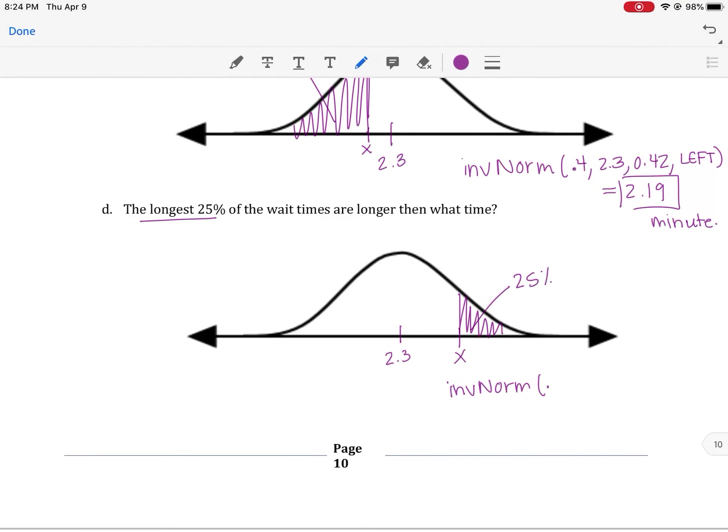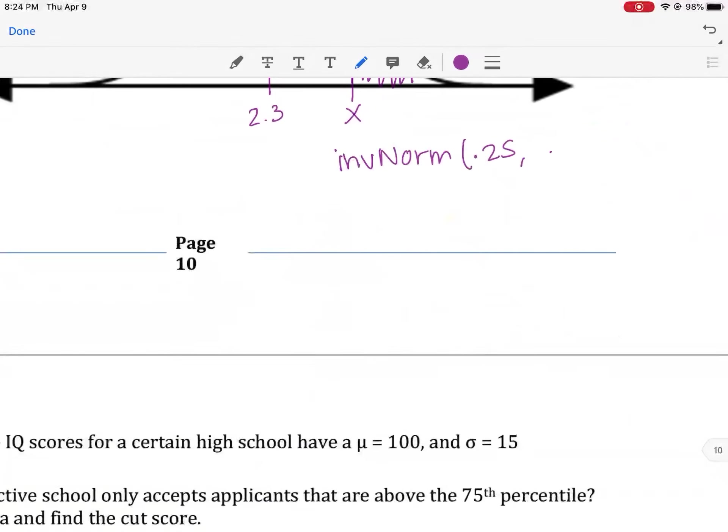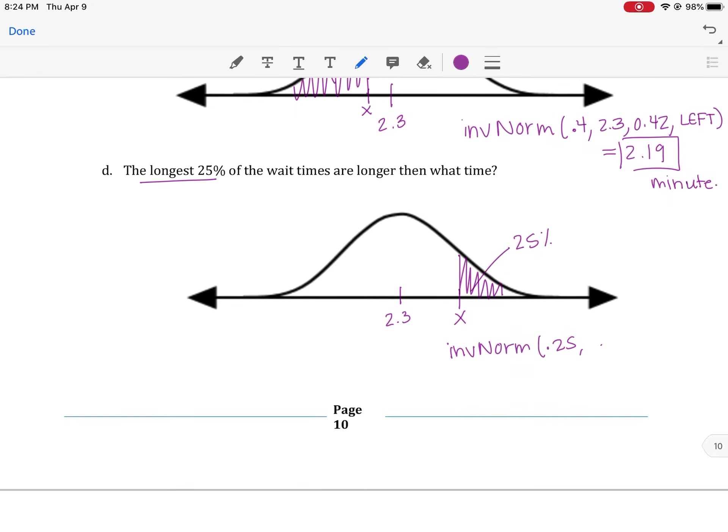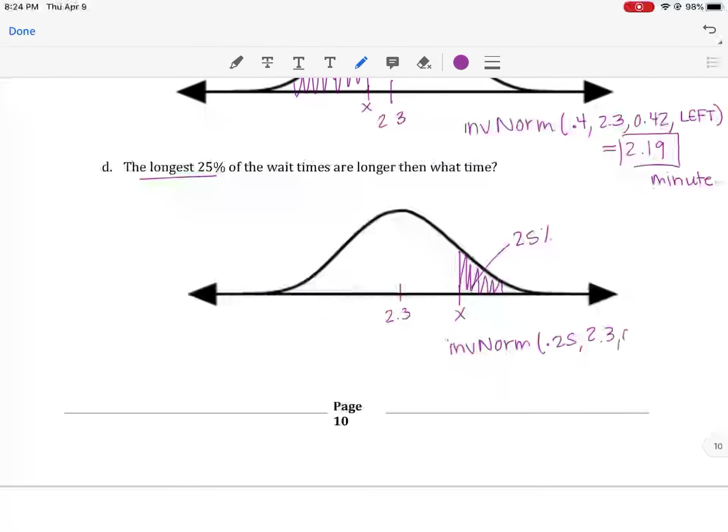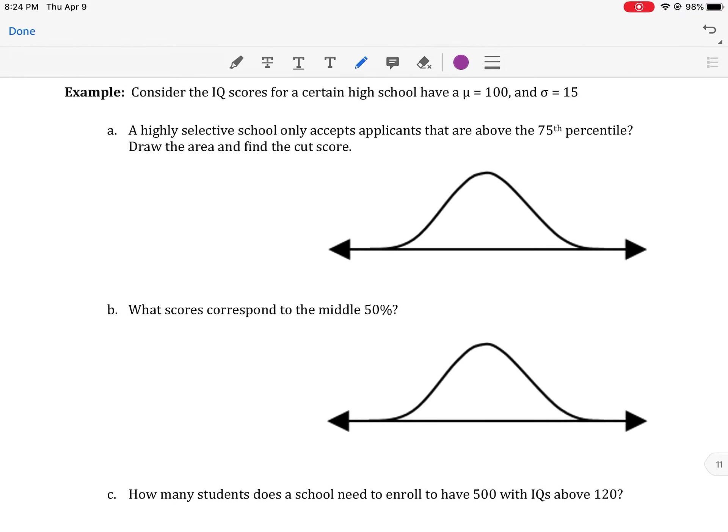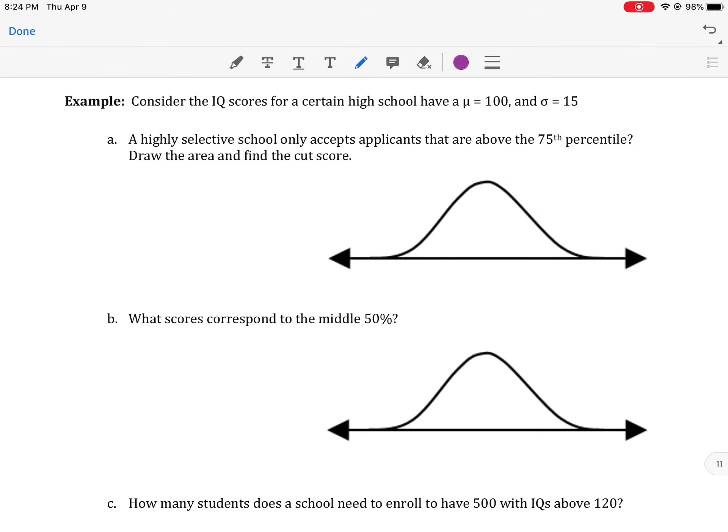Remember the work you show is by writing the picture, but then also you write your inverse norm. This time, we did 0.25 for 25%, 2.3 for the mean, 0.42, and then this time we say right. And we got 2.58 minutes as our answer.